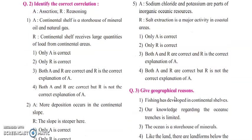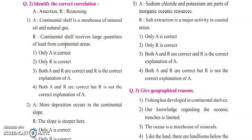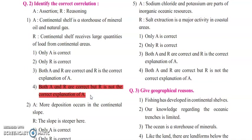Two statements will be given to you — one is assertion and one is reasoning. You have to check whether both statements are true, and whether R gives a correct explanation for A. The first question: assertion is continental shelf is a storehouse of mineral, oil, and natural gas. Reasoning is continental shelf receives a large quantity of load from continental areas. Both A and R are correct, but R is not giving any correct explanation for A — that is the right answer.